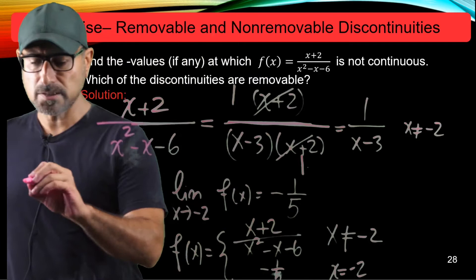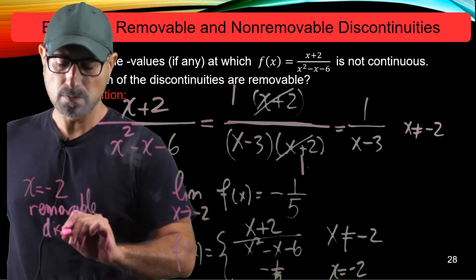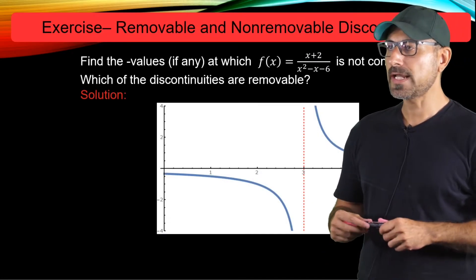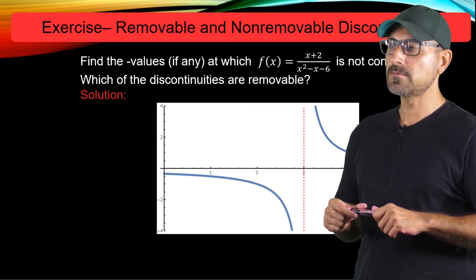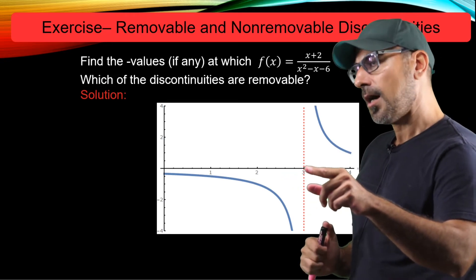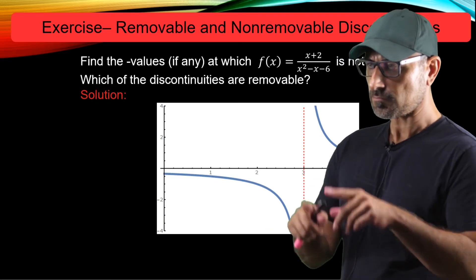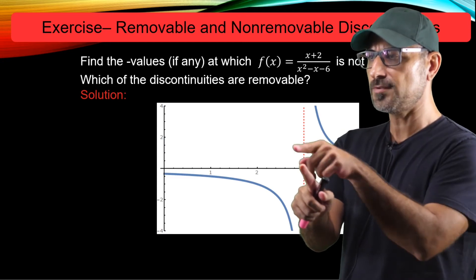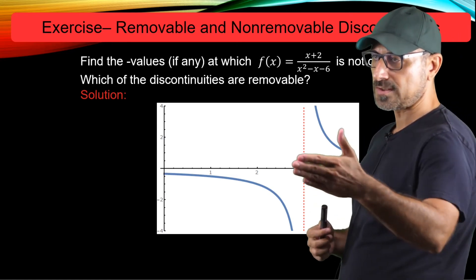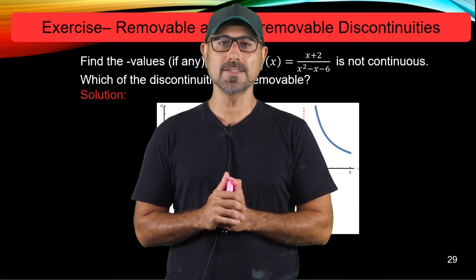So in conclusion, x equals negative 2 is a removable discontinuity, while x equals 3 is a non-removable discontinuity. This is the end of the video — thanks for watching, and I'll see you in another video.